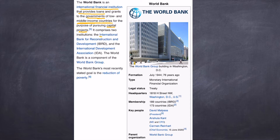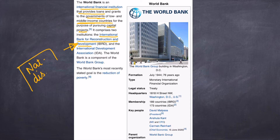The International Bank for Reconstruction and Development, IBRD, focuses on areas where there is a natural disaster. The second thing is the International Development Association, which focuses on the overall development of countries.